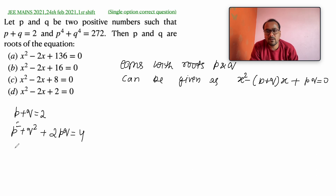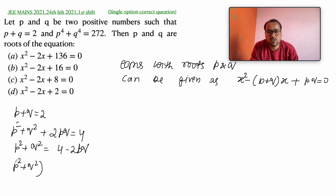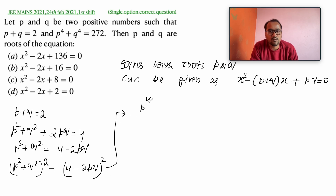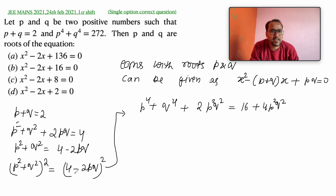Now squaring both sides of p squared plus q squared equals 4 minus 2pq, we get p to the 4th plus q to the 4th plus 2p squared q squared equals 16 plus 4p squared q squared minus 16pq. We use the identity (a minus b) squared equals a squared minus 2ab plus b squared here, where 4 squared is 16 and (2pq) squared is 4p squared q squared.